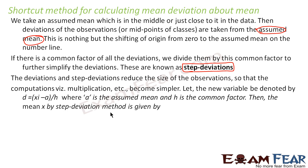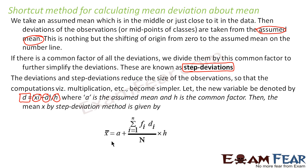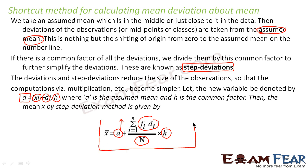We have the original xi, the assumed mean A, and the step deviation h. We get a new value d, where d = (xi − assumed mean) / h. Once we have d, we use the formula: mean = A + (Σfi·di / n) × h. This allows us to skip the difficult step of finding the mean directly.